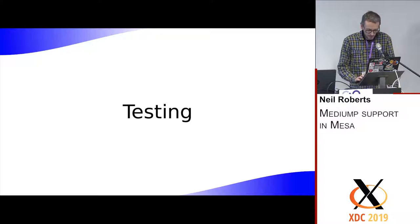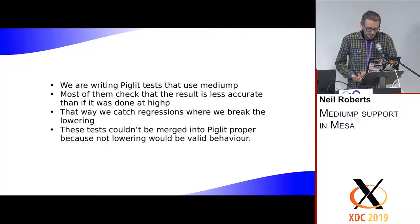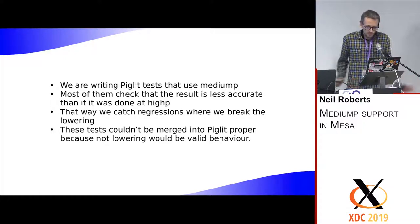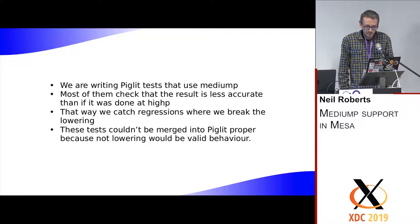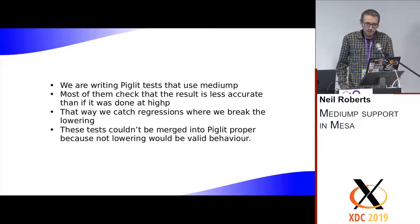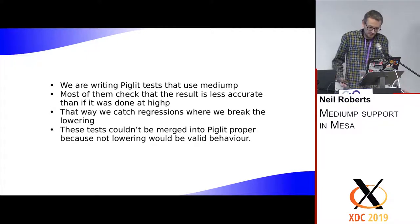While developing this we've been implementing some piglet tests that use mediump operations. Most of them check that the result of the operation is actually slightly off from what you'd expect at highp, so we can be confident the lower precision is working. That way, if changes to the pass accidentally disable the lower precision, we'll notice the regression. However, these piglet tests can't be merged into the piglet master because a valid implementation is just to do everything at high precision — so it's valid for these tests to fail for that reason. But they're useful for development.